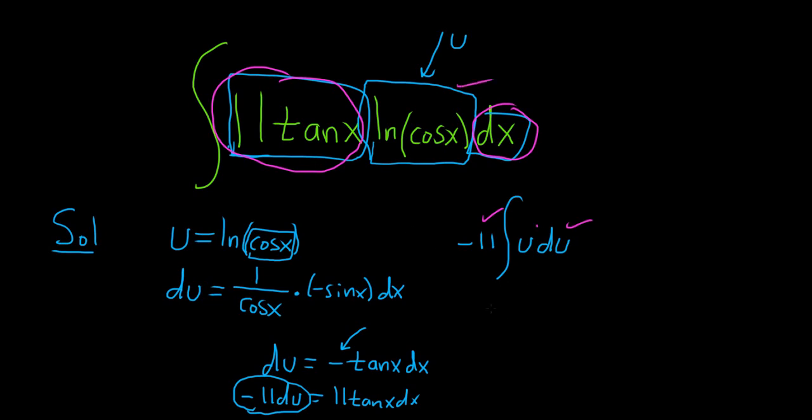Now we just use the power rule. There's a 1 here. So this is negative 11 u²/2 plus C.